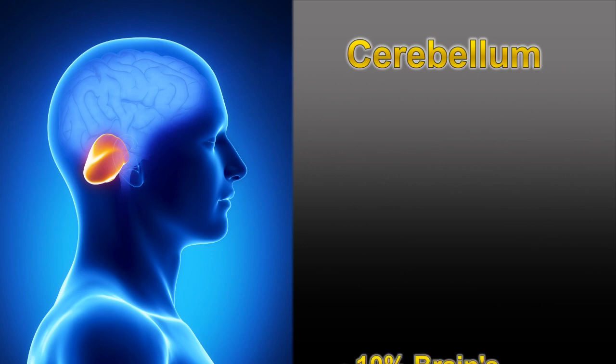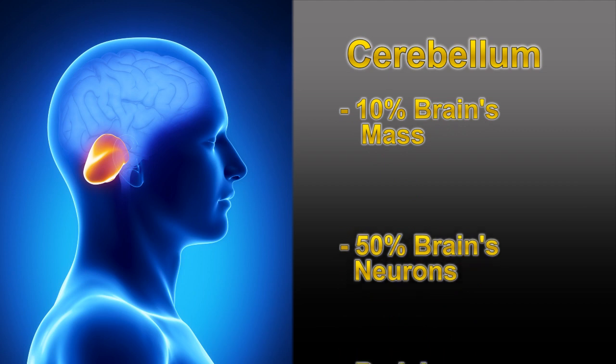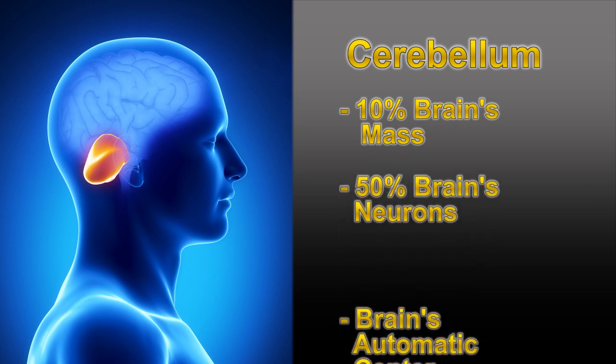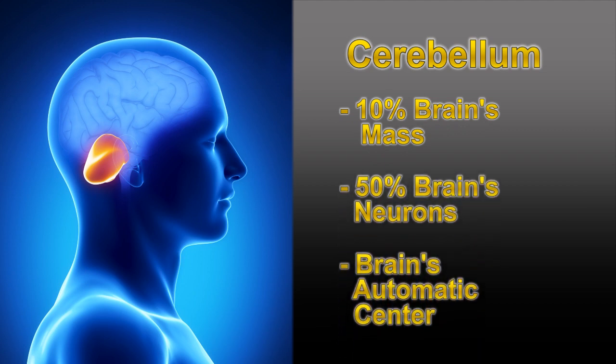The cerebellum is one-tenth of the brain's mass, but contains fifty percent of the brain's neurons. It's the automatic center of the brain that controls things like breathing, digestion, and heart rate.